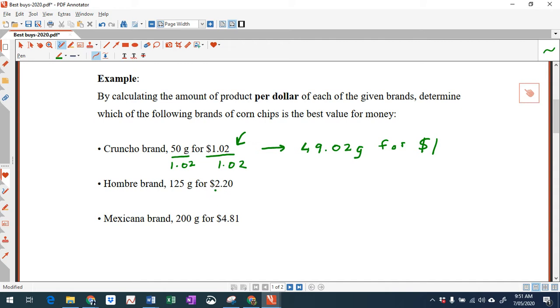Now what about Hombro? Okay, so I'm going to do the same thing here. I'm going to divide by the amount in dollars, so $2.20, and I'll do the same thing over here, divide by $2.20. Now, on your calculator, let's work out what is 125 divided by 2.20. You get 56.82 to two decimal places. So 56.82 grams for $1. So $1 will buy me 56.82 grams.